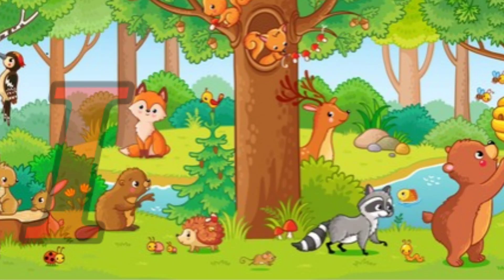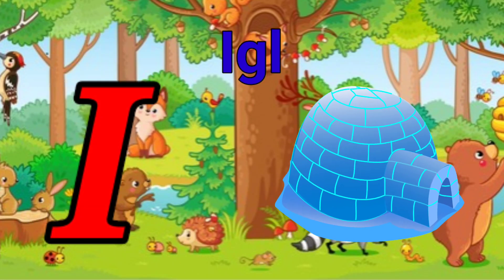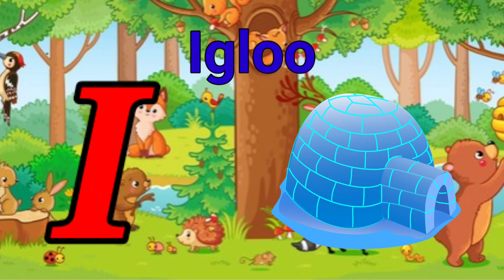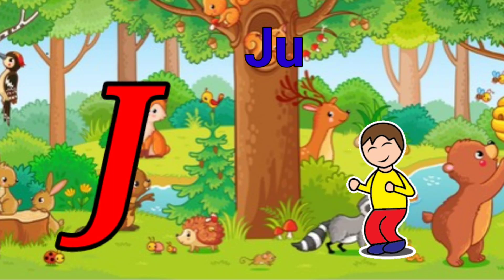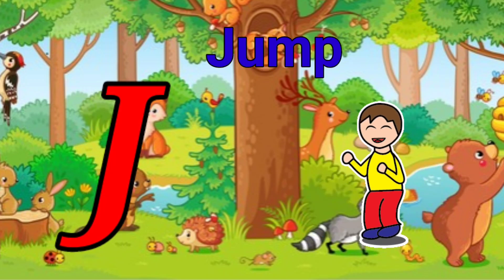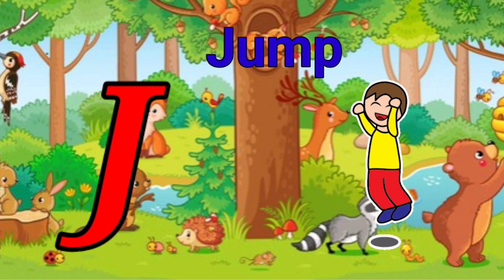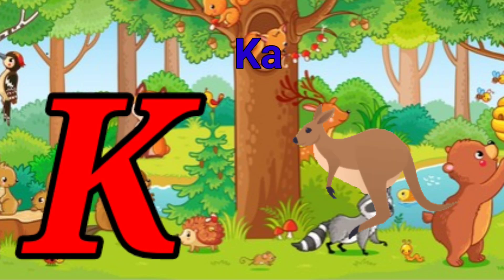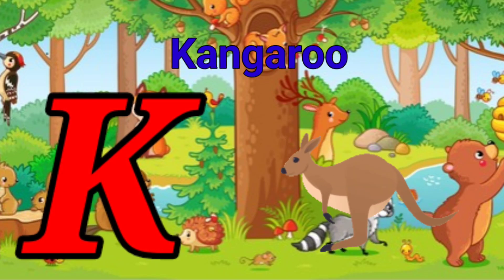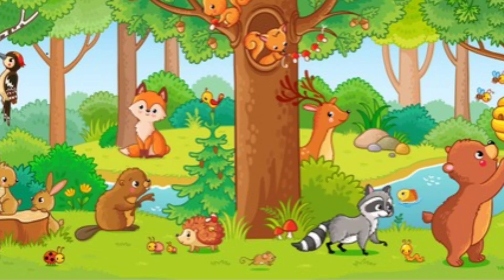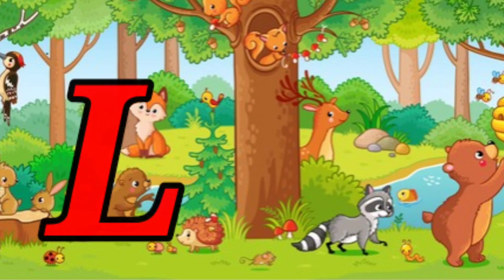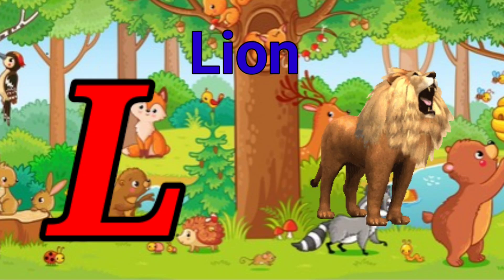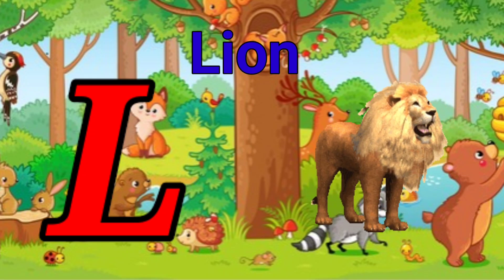I is for igloo, i-i-igloo. J is for jump, j-j-jump. K is for kangaroo, k-k-kangaroo. L is for lion, l-l-lion.